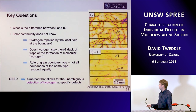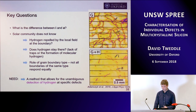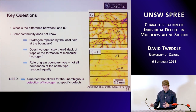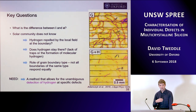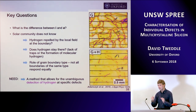What the solar cell community does not know is why some boundaries are still recombination active and why others respond to gettering and hydrogenation. Does the hydrogen get repelled by the local field at the recombination active grain boundary? Does it stay there? Is there a lack of traps, or does it form molecular hydrogen and leave the sample? And what is the role of grain boundary type — why don't all grain boundaries respond equally to the hydrogenation process? What we need is a method that allows for an unambiguous detection of hydrogen at specific defects.